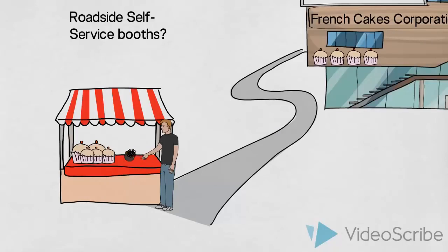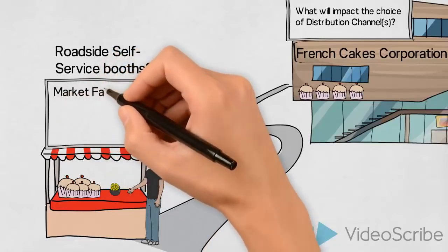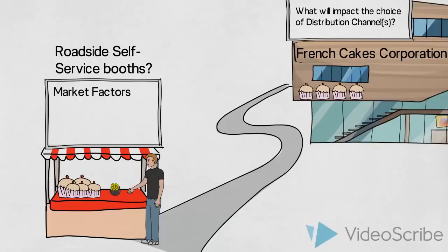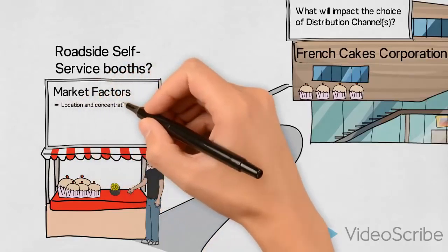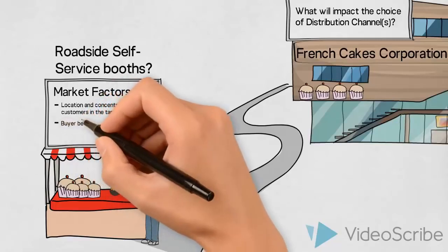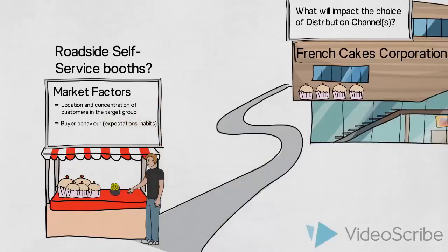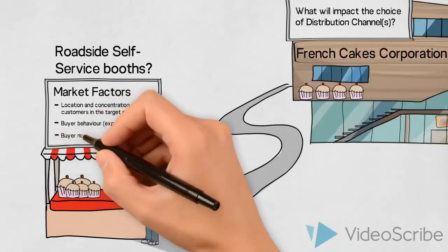In this case, we could argue that they should first of all have considered some market factors. Firstly, what is the location and concentration of their customers? Is it likely that they will be able to sell to a suitable amount of customers with this kind of setup? Secondly, do their customers expect to buy these types of cakes and desserts at roadside booths? If not, it could be a challenge to convince them of the value in doing so.